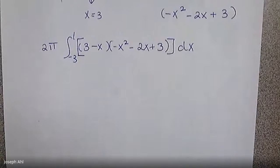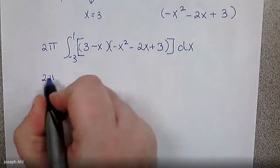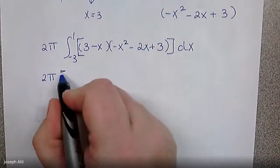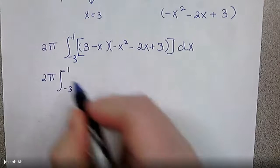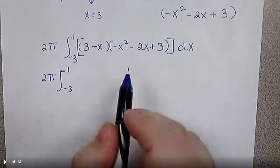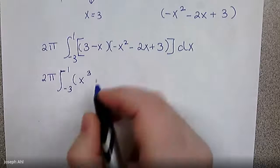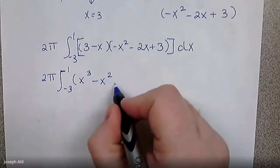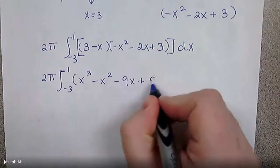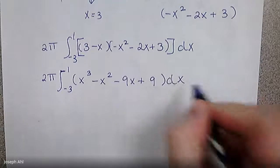So before you go to integrate here, I would probably multiply all that out. It will make it much easier to find the antiderivative in the end. So two π, and then this is going to be the integral from negative three to one of, if I multiply everything out, you will get x cubed, and you're going to get a minus x squared, minus nine x plus nine dx.